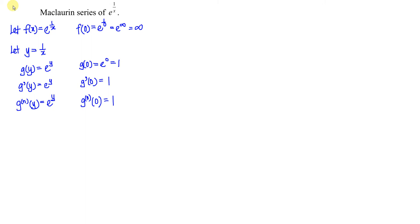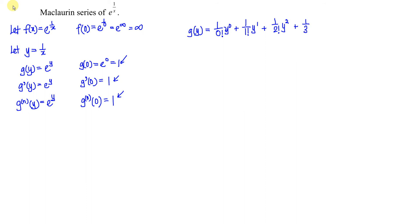From here we can form the Maclaurin series of g(y). The first term is 1 over 0 factorial times y to the power of 0. Plus the second term: 1 over 1 factorial times y to the power of 1. Then we add the subsequent terms: 1 over 2 factorial times y squared, plus 1 over 3 factorial times y cubed, plus 1 over 4 factorial times y to the power of 4, and so on.